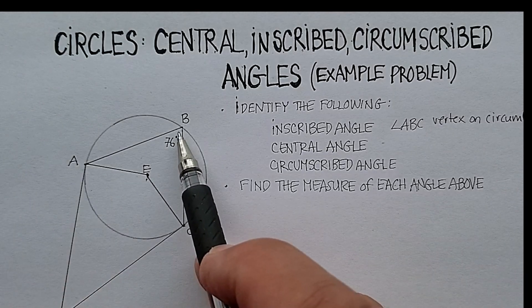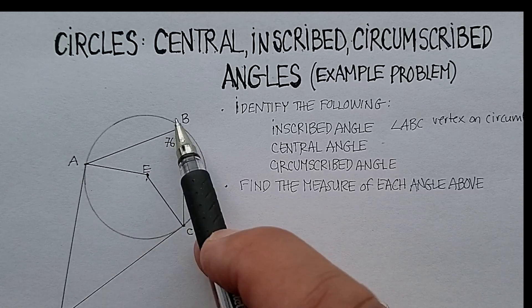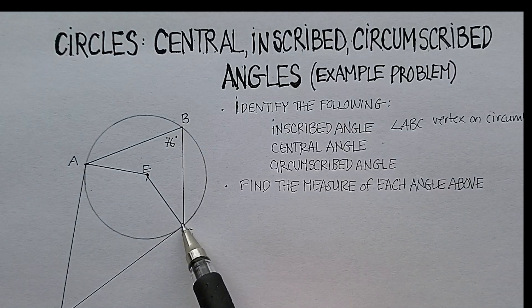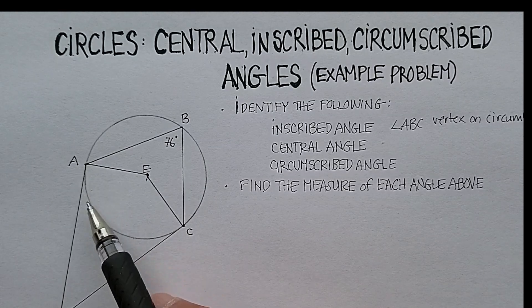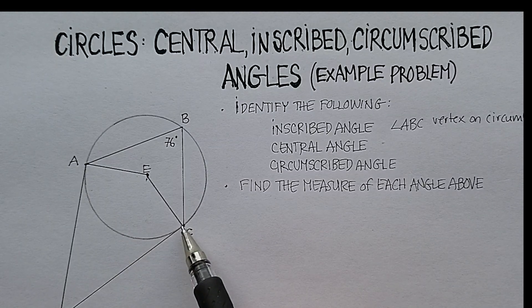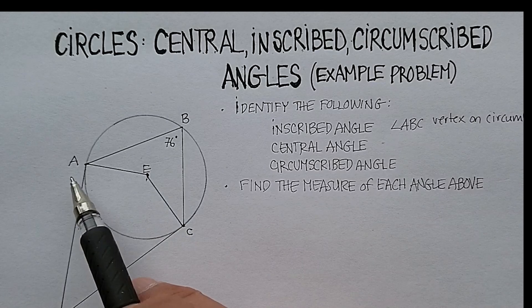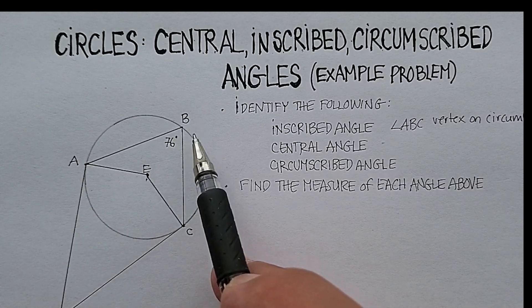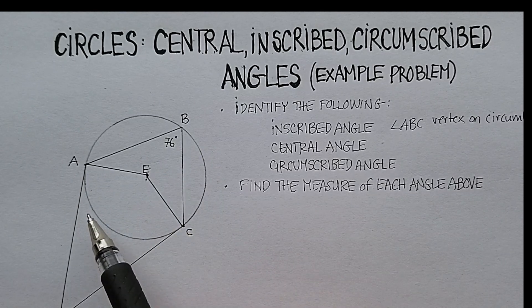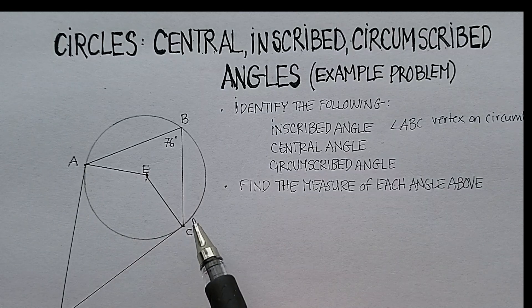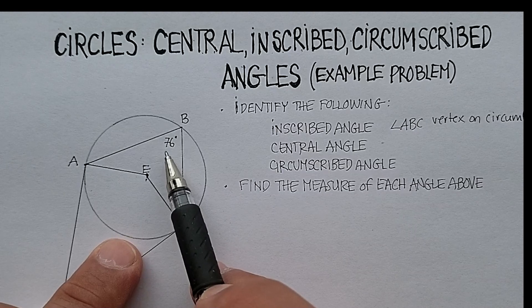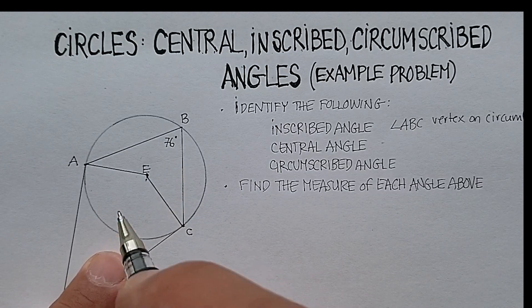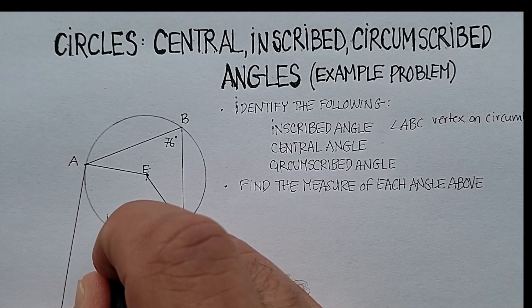Now the reason that's important is because we know that in an inscribed angle, the arc that it intercepts is twice as large. So let me say that again. In an inscribed angle, the arc that it intercepts, in this case arc AC, is twice as large. So in this case, 2 times 76 would be 152 degrees.